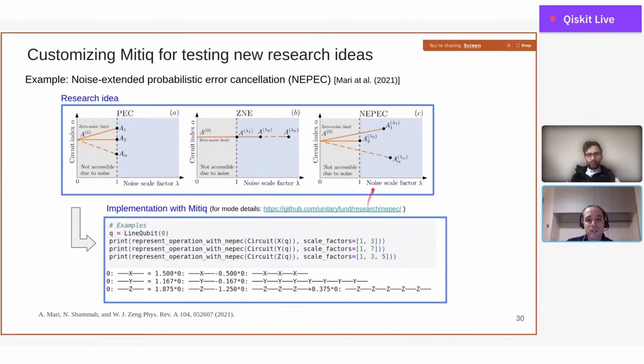So what we propose in this recent work is that you could do both things simultaneously in order to get an extended basis of circuits that you could use to infer the ideal expectation value of interest.